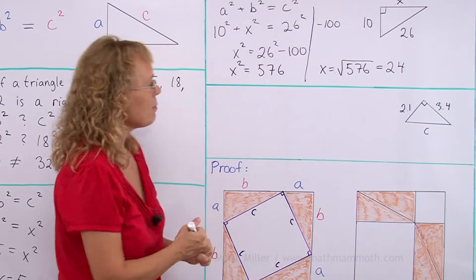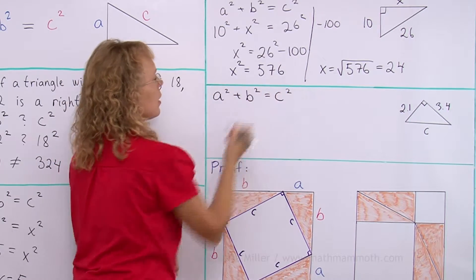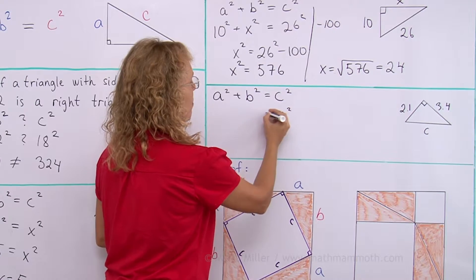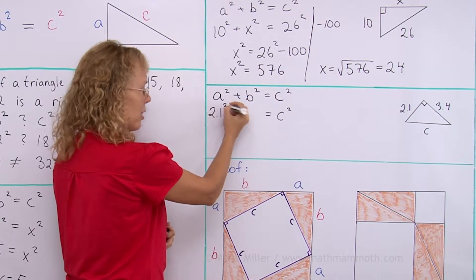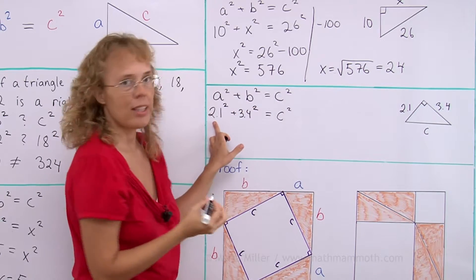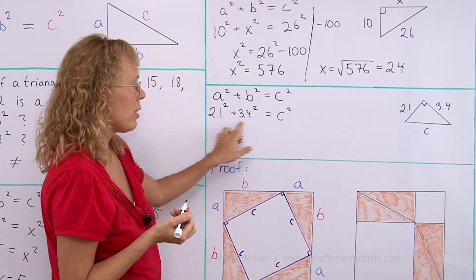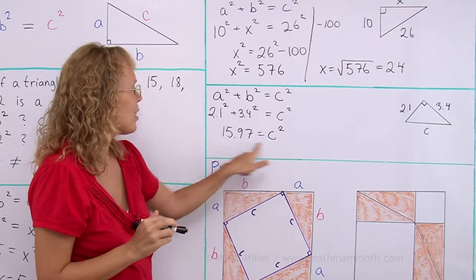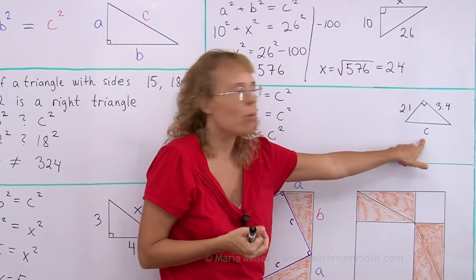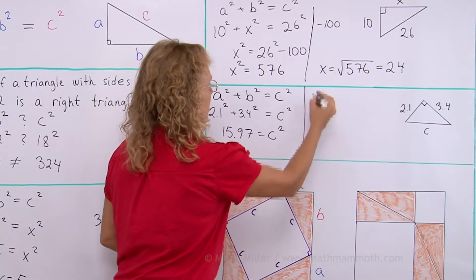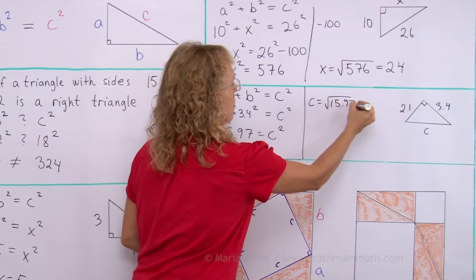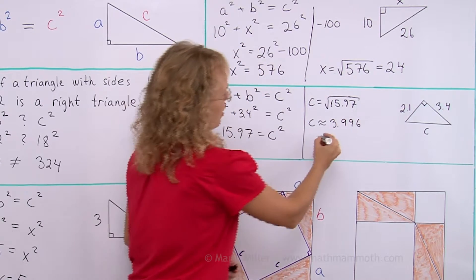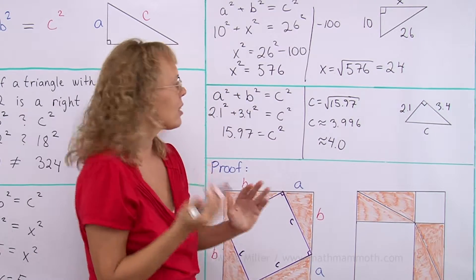Our last triangle for this lesson. The hypotenuse is the longest side, called c, so I write c squared. Then a and b are 2.1 and 3.4: 2.1 squared plus 3.4 squared equals c squared. Using a calculator, that gives 15.97 equals c squared. Don't make the mistake of saying c equals 15.97 — instead, c equals the square root of 15.97, which is approximately 3.996, or 4.0 rounded to one decimal digit.